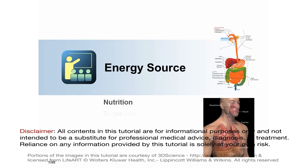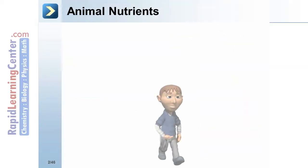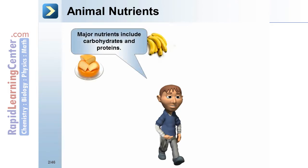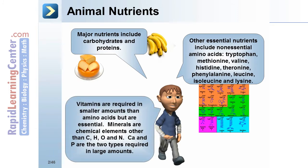Energy source, nutrition, digestion, respiration. Animal nutrients: major nutrients include carbohydrates and proteins. Other essential nutrients include non-essential amino acids such as tryptophan, methionine, valine, histidine, threonine, phenylalanine, leucine, isoleucine, and lysine. Vitamins are required in smaller amounts than amino acids, but some are also essential. Minerals are chemical elements other than carbon, hydrogen, oxygen, and nitrogen. Calcium and phosphate are the two types required.